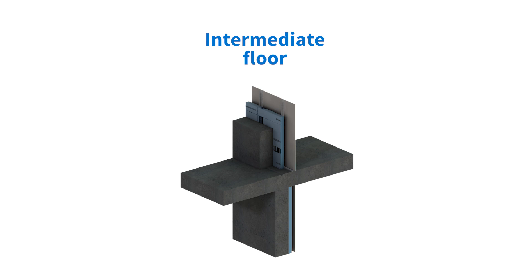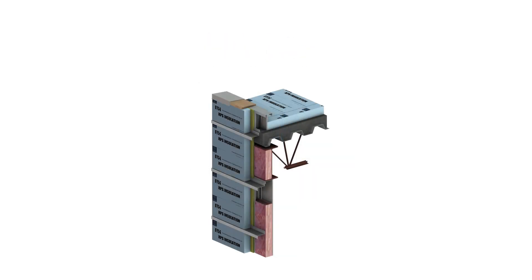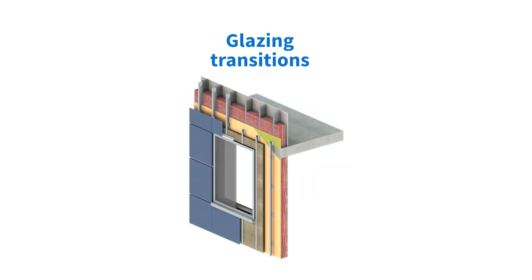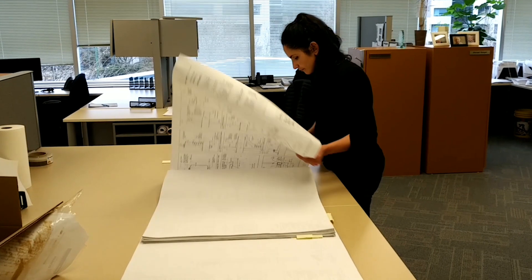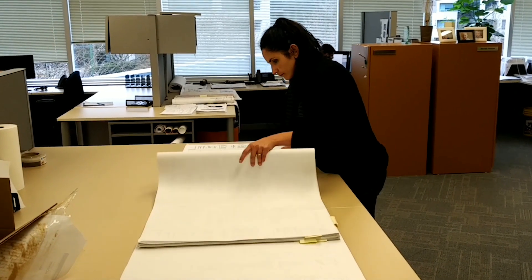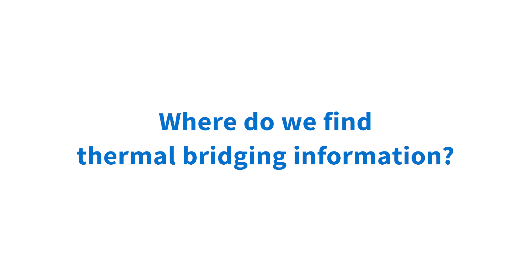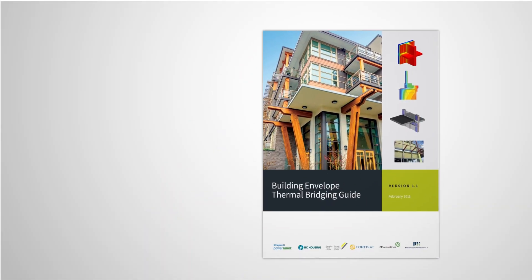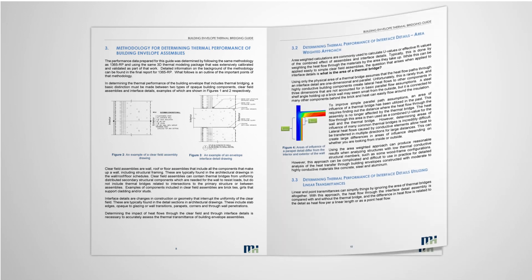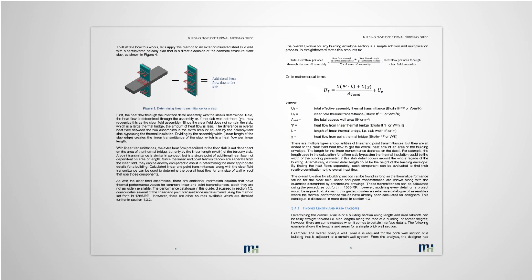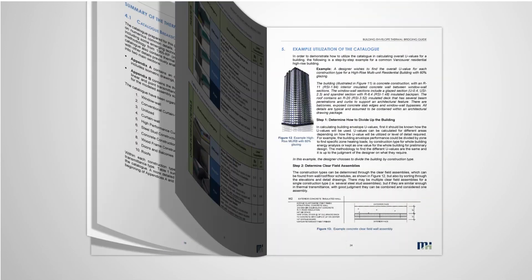Transition details such as floor slabs, parapets, and window-to-wall connections, if left unmitigated, may contribute more towards heat loss than the walls. With that in mind, accounting for these details should be part of the design decisions for the building envelope. With this being a fairly new concept for many building designers, we understand the need for direction regarding thermal bridging in the building industry. With over 500 details and assemblies analyzed for thermal performance, the Building Envelope Thermal Bridging Guide can provide comprehensive guidance for mitigating thermal bridging in your projects.